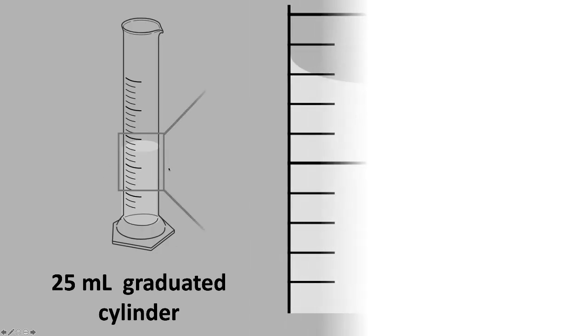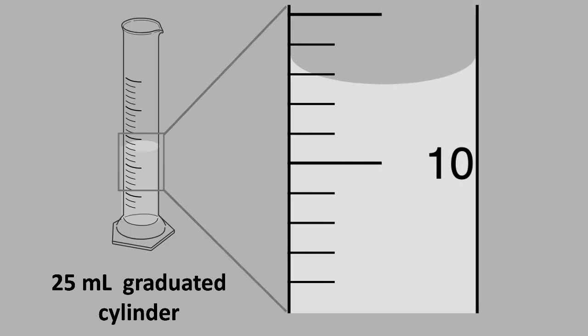To get an accurate reading of the volume of liquid in the graduated cylinder, you need to make an estimate, and you're going to make an estimate at the bottom of this sort of curved part at the surface of the liquid, what's called a meniscus.